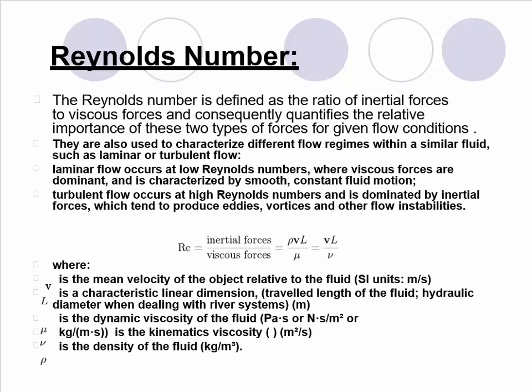By the formula of inertial force upon viscous force, the Reynolds number is given by rho·V·L divided by mu. Where V shows the mean velocity of the object relative to the fluid, L is a characteristic linear dimension, mu shows the dynamic viscosity, and rho shows the density of the fluid.